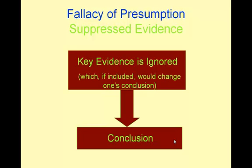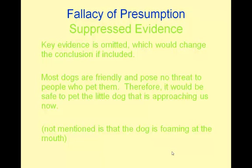Another fallacy of presumption is called suppressed evidence, where key evidence is ignored. If it were included, it would definitely change the conclusion. For example: 'Most dogs are friendly and pose no threat to people who pet them. Therefore, it would be safe to pet this little dog that is approaching us.' But what is not mentioned is that the little dog is foaming at the mouth.